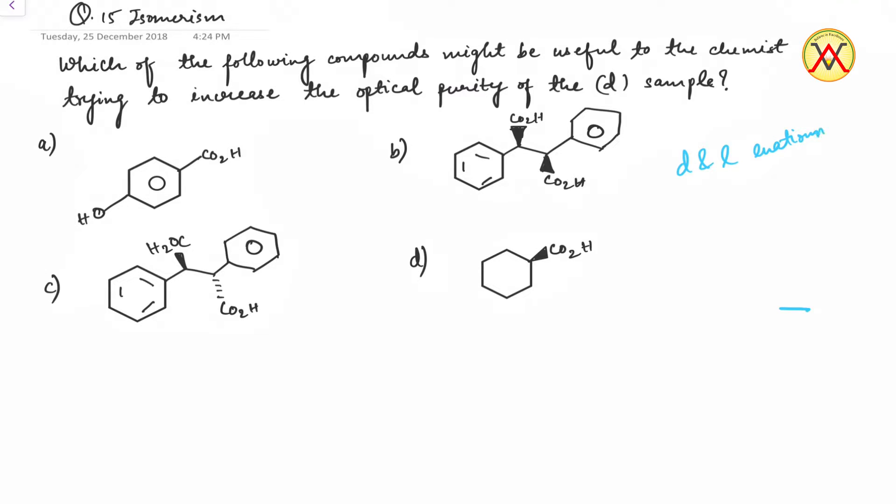Suppose we have a sample which has both D and L enantiomers and we want to increase its optical purity. Let's suppose we want to separate the D from the L. This process is also known as resolution of enantiomers.